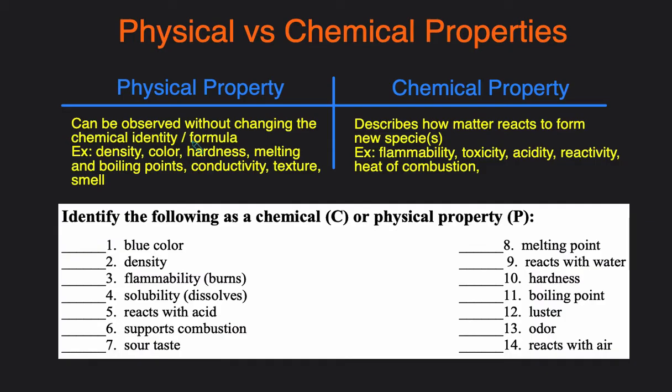These can typically be observed with the five senses. Examples of physical properties are density, color, hardness, melting and boiling points, conductivity, texture, and smell. So anything that you can observe without changing or reacting the compound or element.